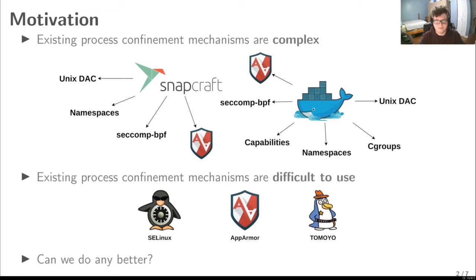Higher-level process confinement mechanisms in Linux such as Snap and Docker are generally made up of a combination of multiple lower-level techniques. The idea is that these techniques, taken together, can produce a complete solution. Often, the policy is defined by writing high-level package manifests for the application, which are then translated into the underlying policy mechanisms. Unfortunately, this typically results in policy that is easy to write but difficult to audit, and is often overly permissive in practice.